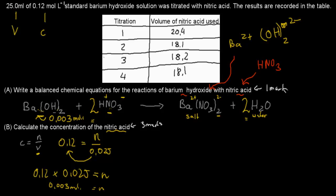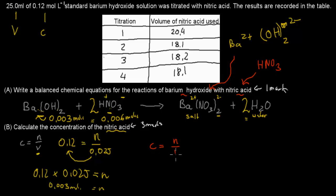Now that we have the moles of barium hydroxide, and we know that 1 mole of Ba(OH)₂ reacts with 2 moles of HNO₃, whatever we have for barium hydroxide must be doubled to get the moles of nitric acid. So that gives us 0.006 moles of HNO₃.